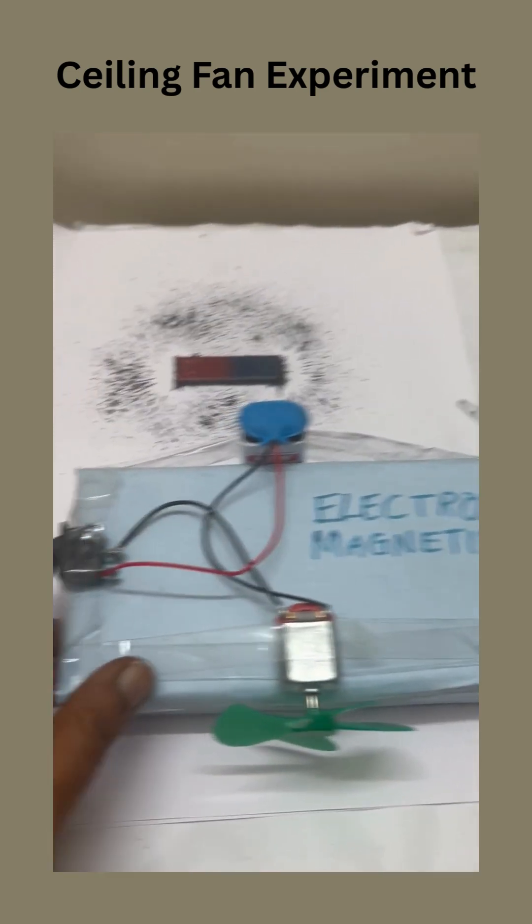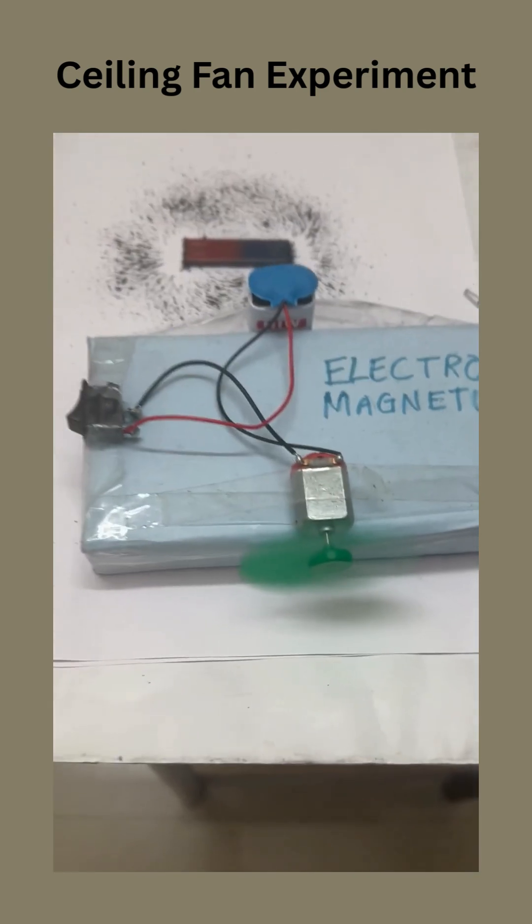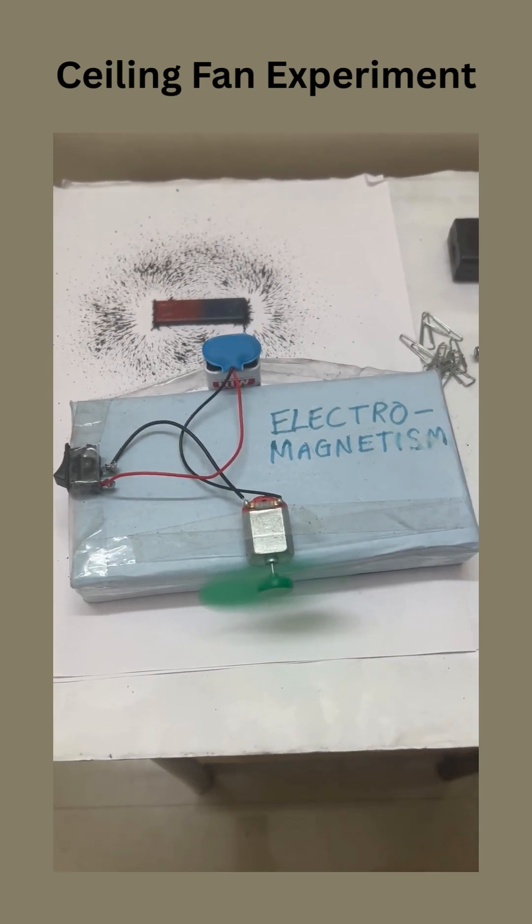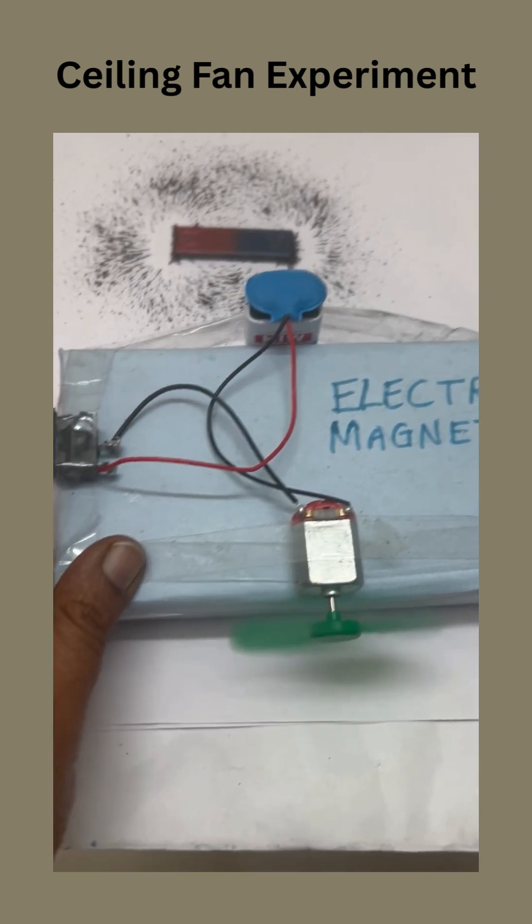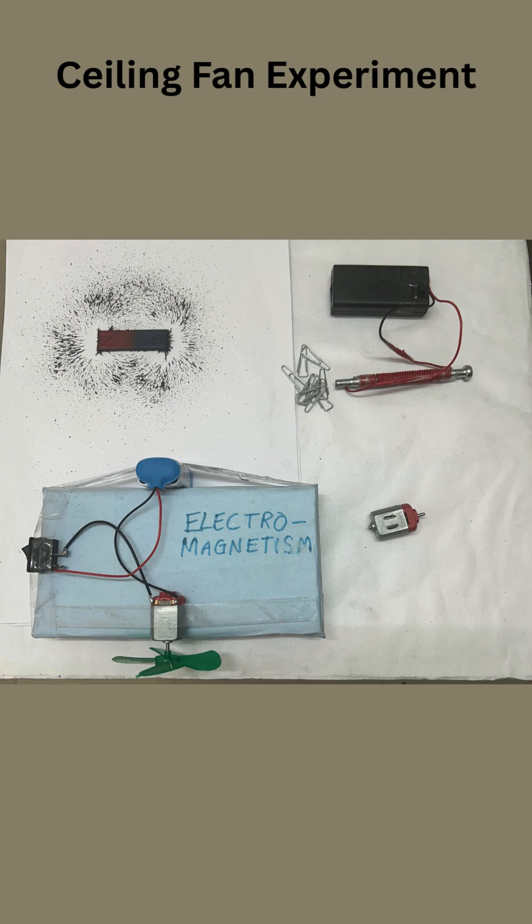The battery sends electric current through the motor. Inside the motor, electromagnetic forces turn the shaft. The spinning shaft rotates the fan blades, creating airflow. This is how electromagnetism converts electrical energy into mechanical motion, just like in a real ceiling fan.